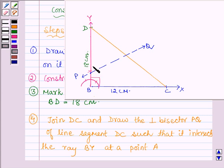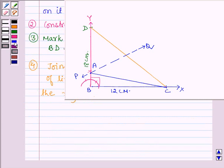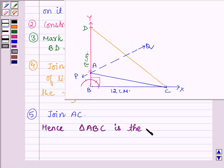Now the point of intersection we call it as A and lastly we shall join A to C to get the required triangle. So the last step we shall join AC and hence triangle ABC is the required triangle.